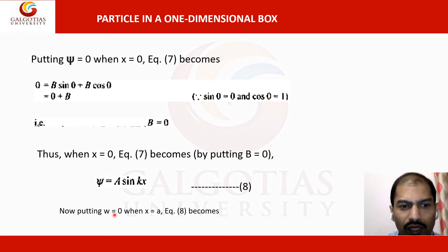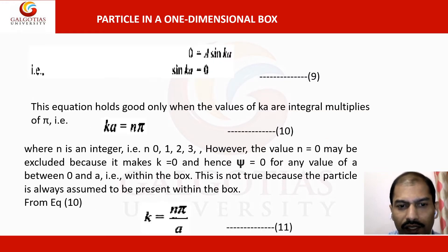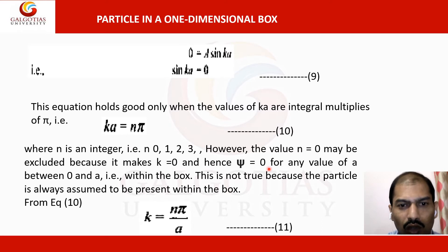Now applying the second boundary condition, ψ = 0 when x = a: the equation gives 0 = A sin(ka), which means sin(ka) = 0. This holds only when ka = nπ, i.e., k = nπ/a, where n is an integer (1, 2, 3, ...). The value n = 0 is excluded because it would make ψ = 0 everywhere inside the box, implying no particle is present.